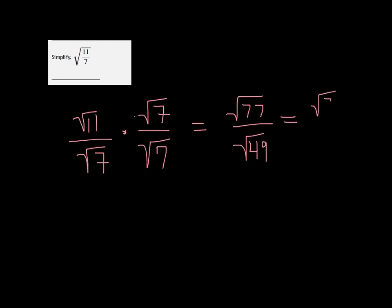But the square root of 49 is just 7. So our final answer is the square root of 77 over 7.